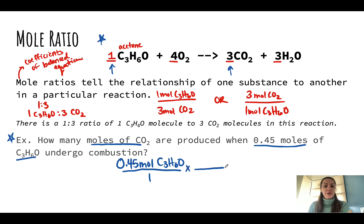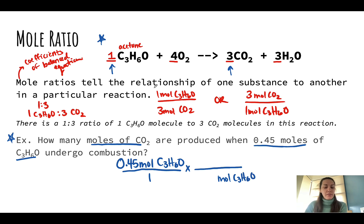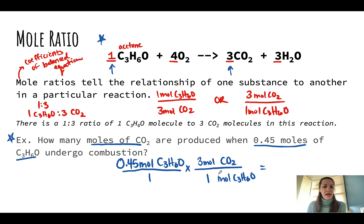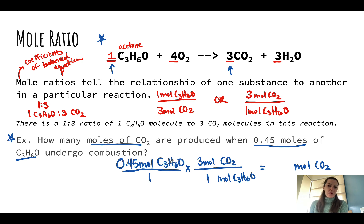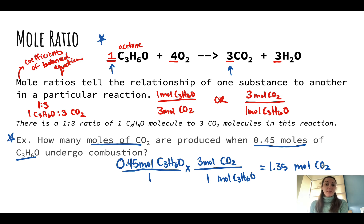So what we can do is, like we always do with dimensional analysis, we're going to drag our unit to the bottom — moles of C3H6O. And how many? Well, it's 1 mole, coefficient 1, to every 3 moles of CO2. You can see how my moles will cancel out — moles C3H6O on the numerator and the denominator — and I'm left with moles of CO2. To solve this problem numerically, I'm going to take my 0.45 moles and multiply it by 3 moles. That gives us 1.35 moles of CO2. So that's our basic problem that we're going to work with.